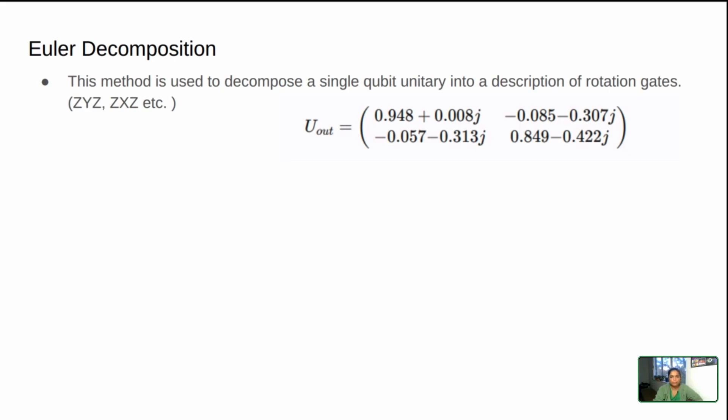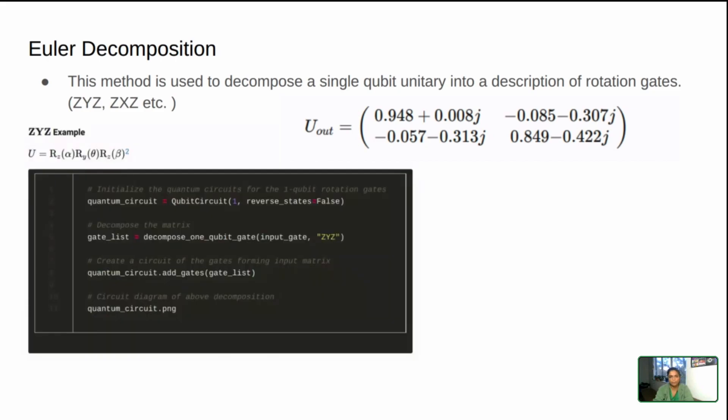Some of the combinations are possible in Q-tip right now. This is just some random unitary I chose, and what I'm trying to show here is I want to decompose that into a product of rotation gates along the Z axis and the Y axis. It's possible to do that right now in Q-tip.